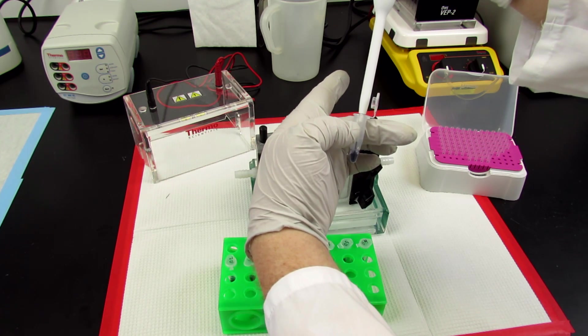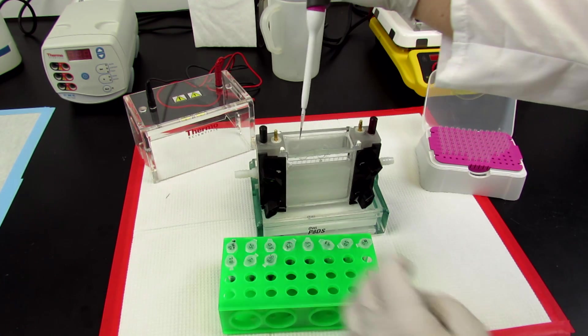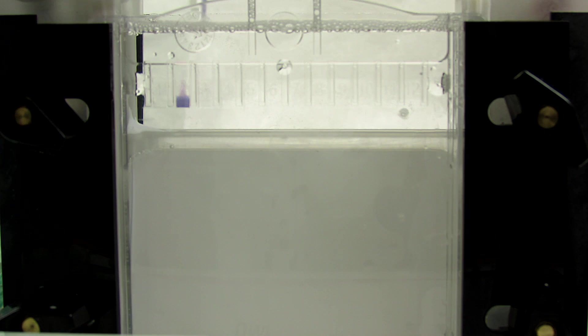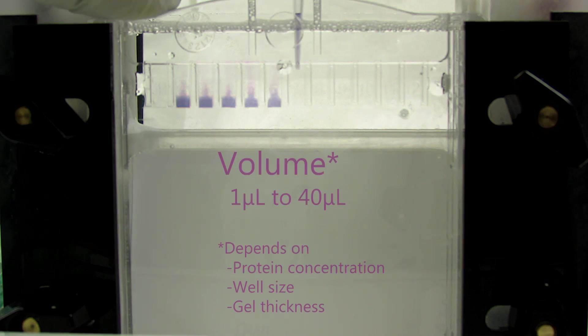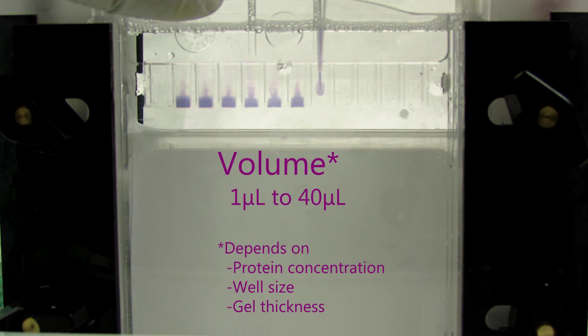Then load the protein samples into the wells in the gel. Because the glycerol in the loading buffer is heavier than the running buffer, the samples should easily drop to the bottom of their respective wells. The volume loaded into each well can range from 1 microliter to over 40 microliters, depending on the protein concentration, well size, and gel thickness.